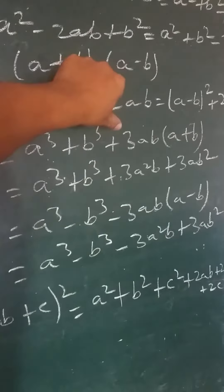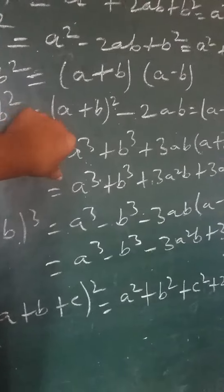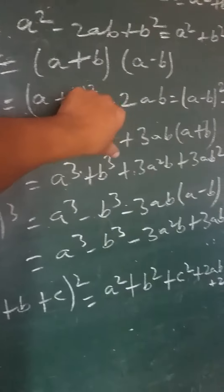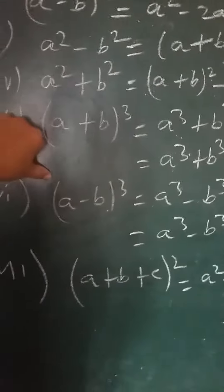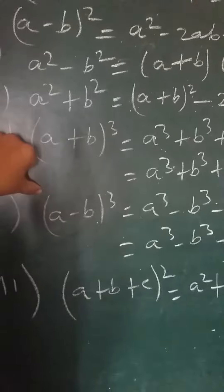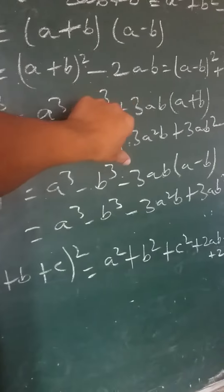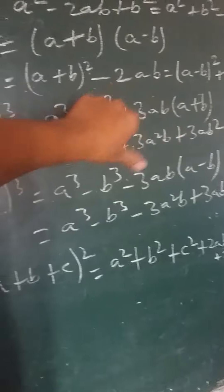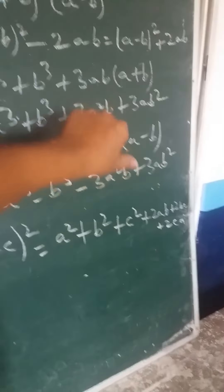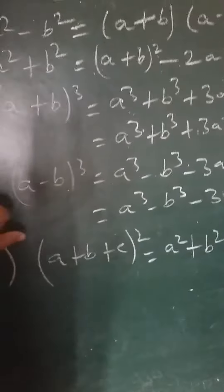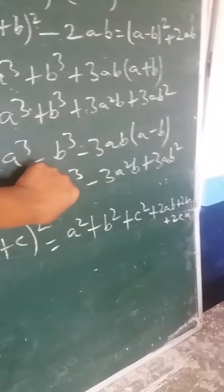(a + b) whole cube expanded equals a cube plus b cube plus 3a square b plus 3ab square. (a - b) whole cube equals a cube minus b cube minus 3ab into (a - b), which equals a cube minus b cube minus 3a square b plus 3ab square.